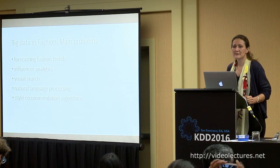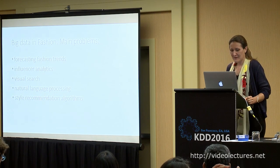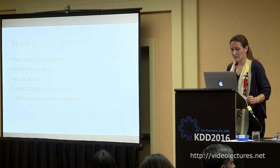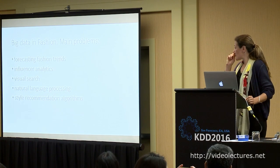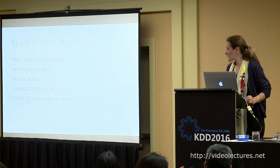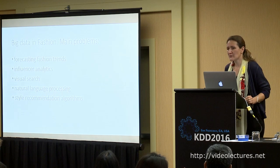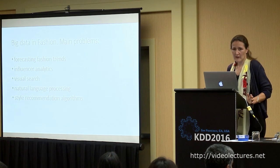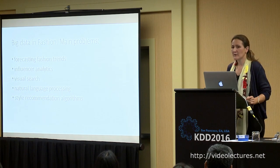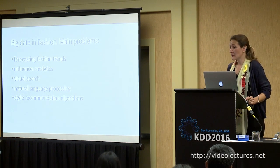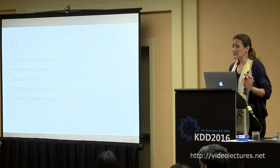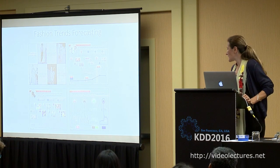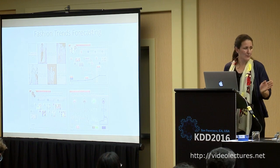The big topics in big data and fashion — the main problems — are five: forecasting fashion trends, influencer analytics, visual search, natural language processing, and style recommendation algorithms. The best resource where these five problems are described is the 'Fashioning Data' report created by Lisa Kindred and Julia Still in 2015. I highly recommend reading it, as it describes many startups working with big fashion data and the challenges in this field very well.